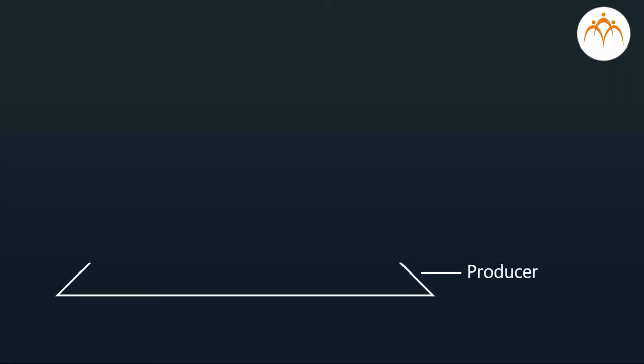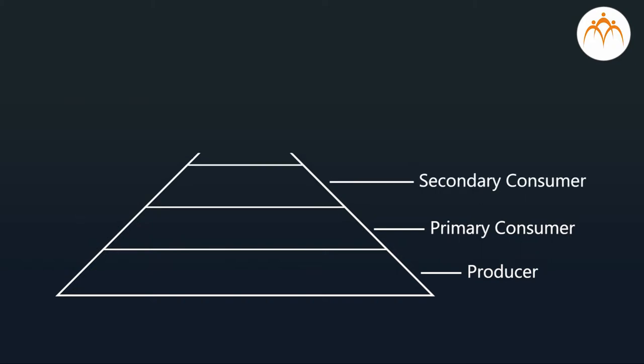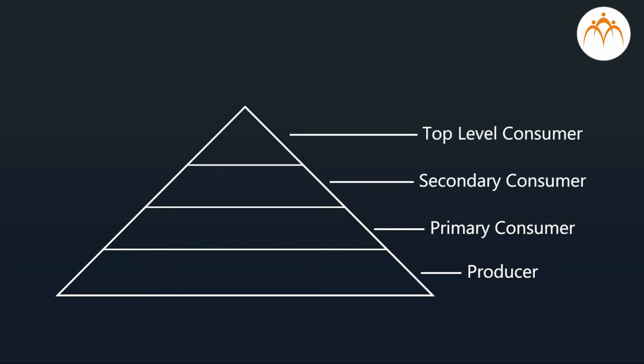After that, classify the organisms based on their nutrition pattern — meaning which are plants, herbivores, and carnivores. Study the interrelationship between those members and their interdependence on each other for food. When you arrange these organisms in a row based on what they eat, your food chain gets constructed. Also note the tentative number of individuals from each level: producers, primary consumers, secondary consumers, and top-level consumers.